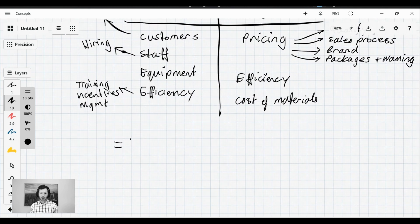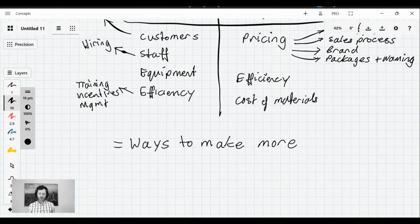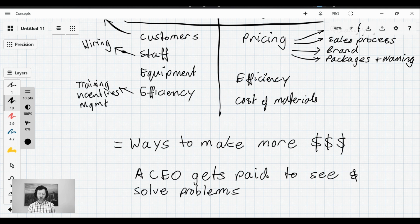So hopefully you can see what we have here now. It's essentially a list of ways to make more money. And we're starting to get an understanding of the nature of your job as the leader of this business. A CEO gets paid to see and solve problems for profit.